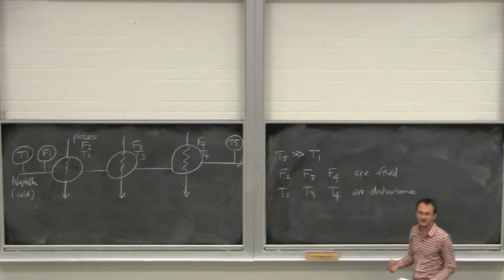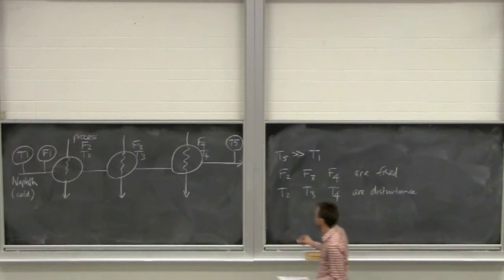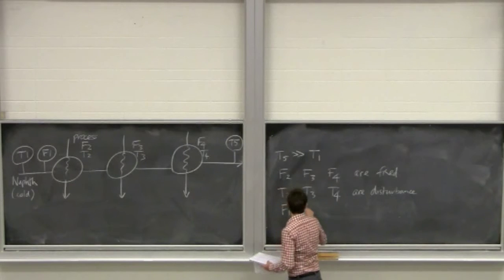So upstream there might be disturbances that upset T2, T3, T4. So we just have to accept whatever heat we get there. We can't guarantee that those temperatures will be any particular value, other than some range of them, some range of values.